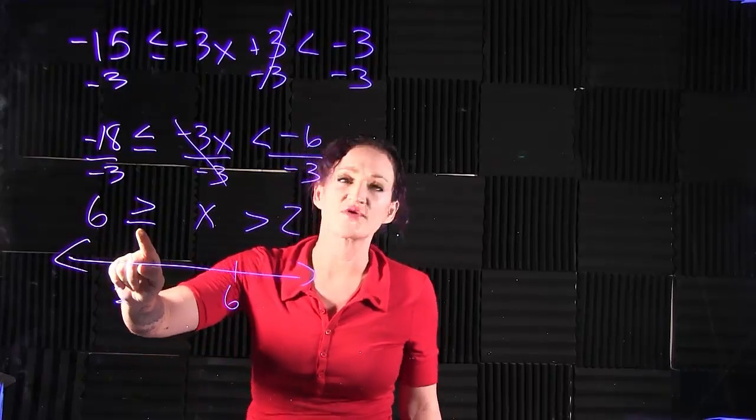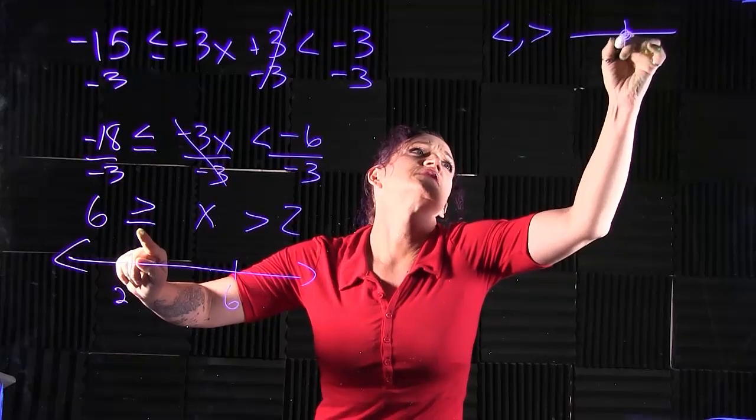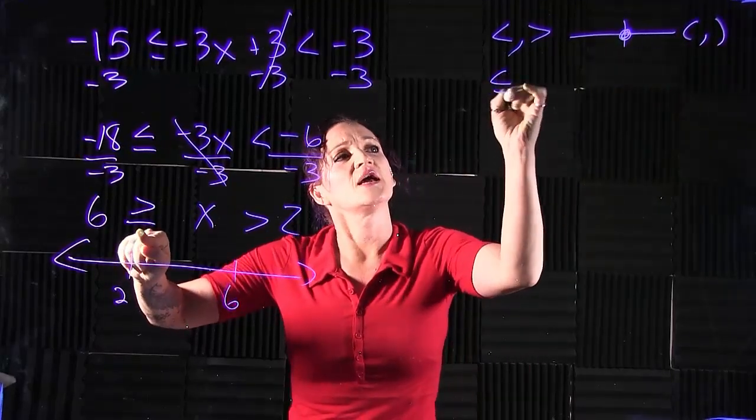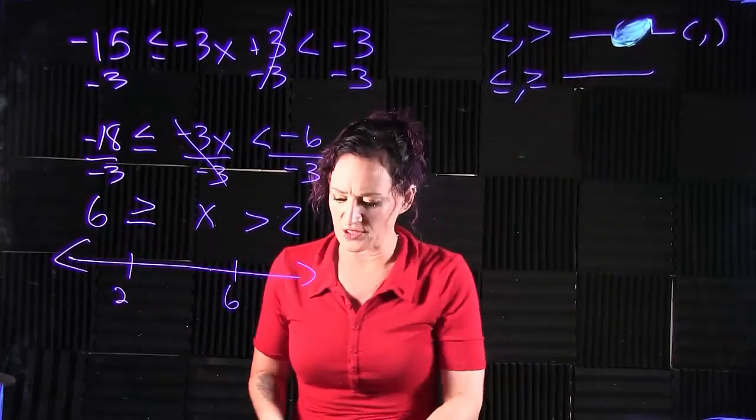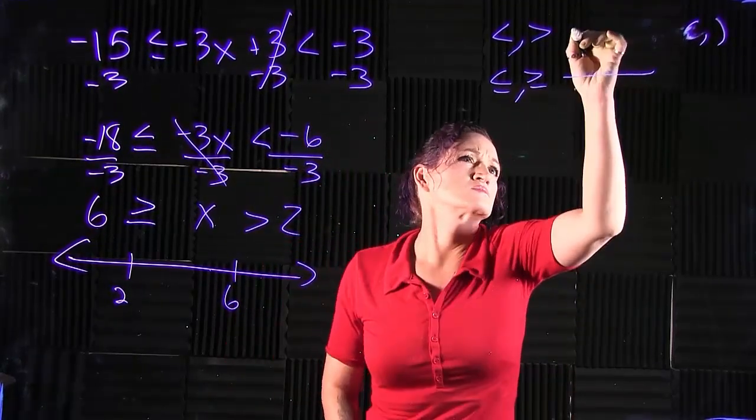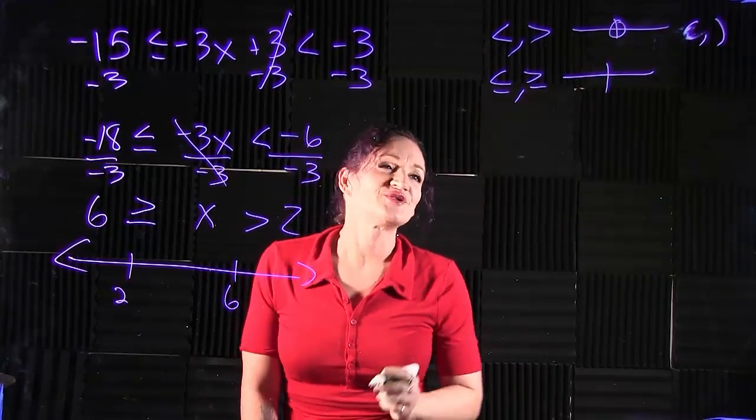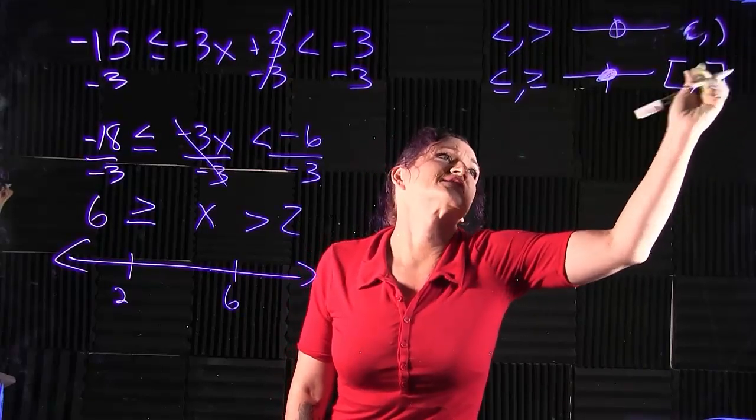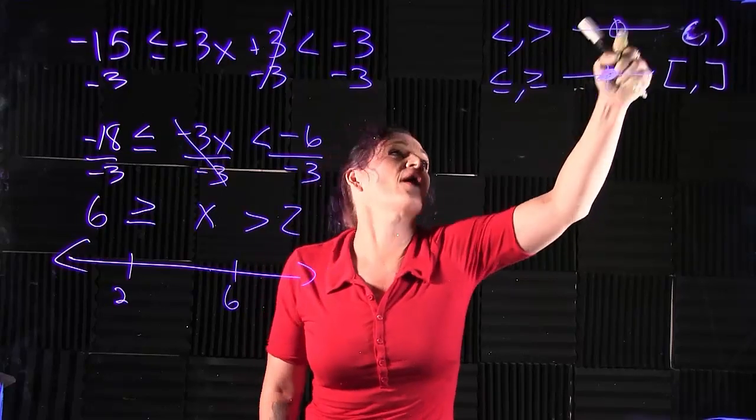By the 6 we have the greater than or equal to symbol. For greater than or equal to, we have a solid dot and we use brackets when it comes to interval notation. Less than or greater than, open dot, parentheses. Keep in mind infinities, we also use parentheses.